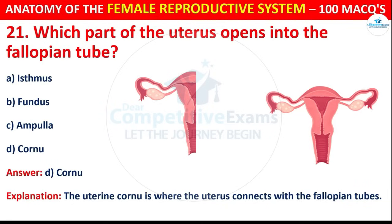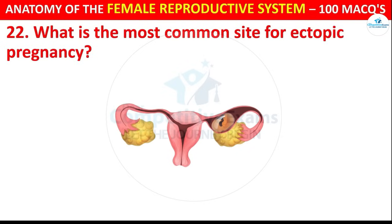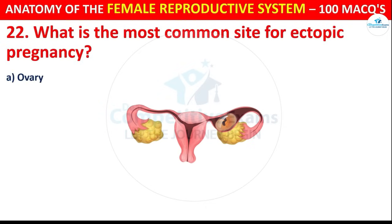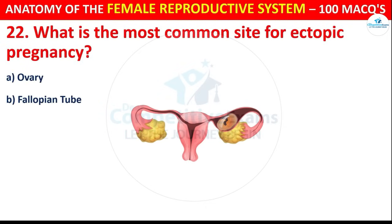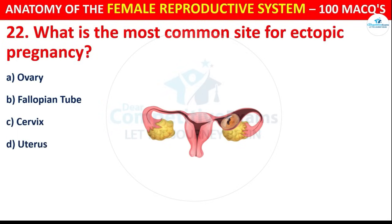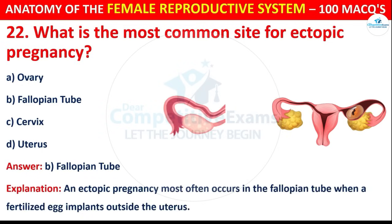Question number 22: What is the most common site for ectopic pregnancy? Options are: Ovary, Fallopian Tube, Cervix, or Uterus. The correct answer is B, i.e. Fallopian Tube. An ectopic pregnancy most often occurs in the fallopian tube, when a fertilized egg implants outside the uterus.